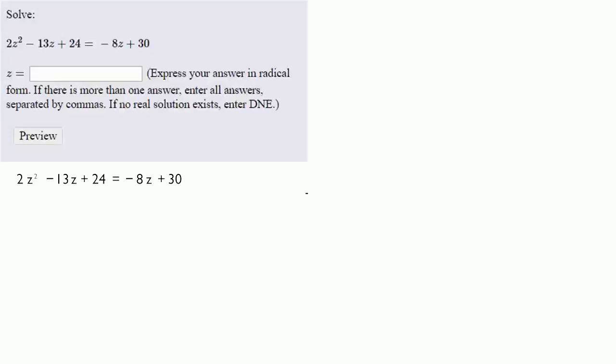So let's solve the equation 2z squared minus 13z plus 24 equals negative 8z plus 30. The first thing to notice is this equation has a z squared in it, which means that this is a quadratic equation.